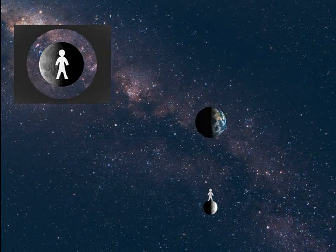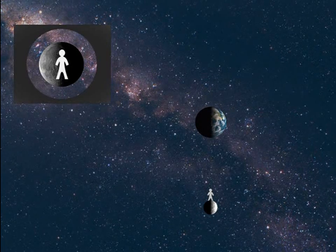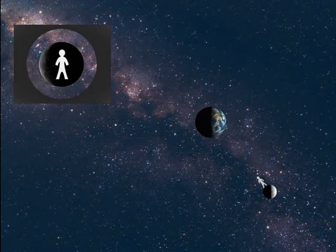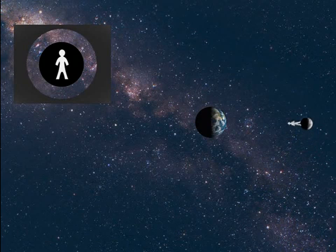If we want to keep that figure, that astronaut, always facing towards the Earth, the Moon has to rotate. As it revolves around the Earth, it has to rotate a little bit to keep that astronaut pointing towards the Earth.